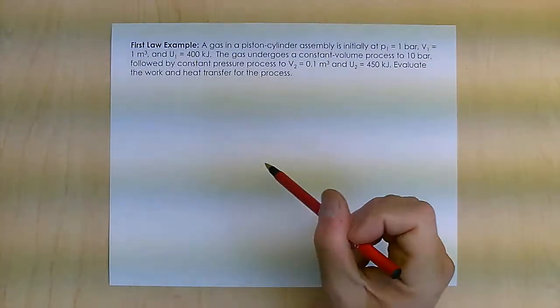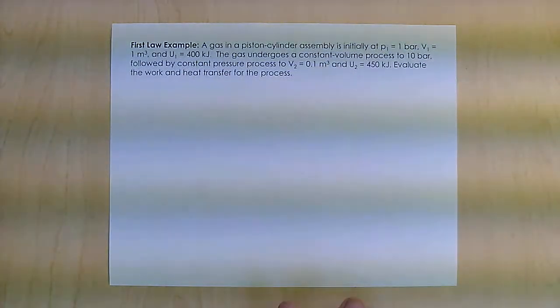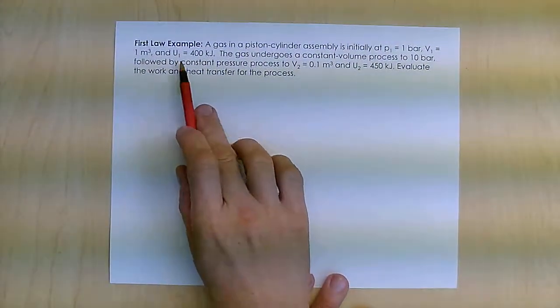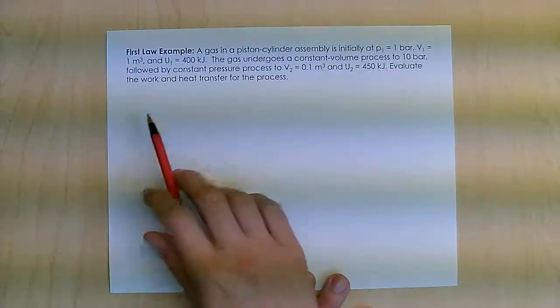I've got gas in a piston cylinder assembly. It's initially at one bar and one cubic meter and has an internal energy of 400 kilojoules.